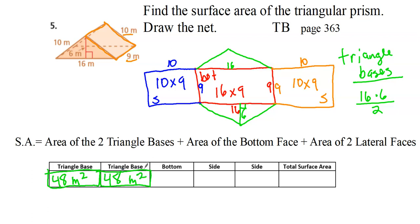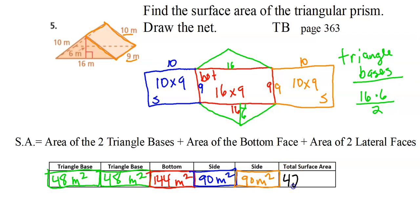Calculating: triangle bases are 16 times 6 divided by 2 equals 48 meters squared each. Bottom: 16 times 9 equals 144 square meters. Blue side: 10 times 9 equals 90 meters squared. Orange side: also 90 meters squared. Adding all the numbers together gives a total of 420 square meters. That's the lesson on finding the surface area of triangular prisms — good luck with the homework!